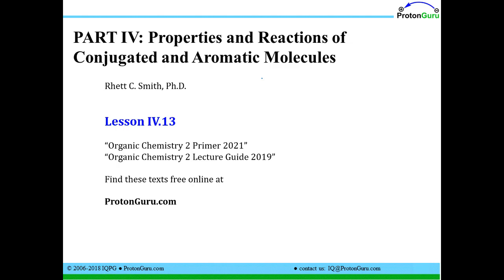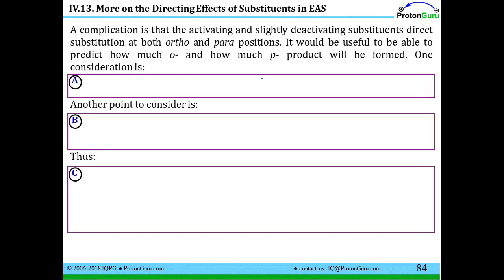Welcome back everyone. I'm Professor Rhett Smith for ProtonGuru.com. Today we're continuing our discussion of electrophilic aromatic substitution in lesson 4.13. In our last lesson, we talked about how the activating or deactivating nature of a substituent can lead to either a mixture of ortho and para as the major product, or a meta-substitution product as the major product in electrophilic aromatic substitutions where there's already one substituent on the benzene ring.